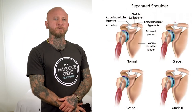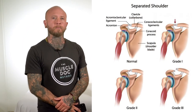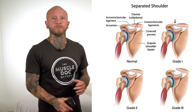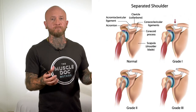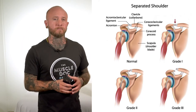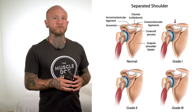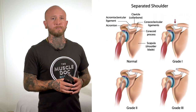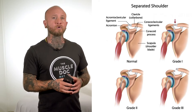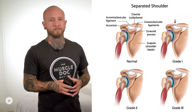Grade 1 is a simple sprain to the AC joint with minor damage to the ligament and no separation of bones. Grade 2 involves the rupture of the AC ligament, or the acromioclavicular ligament.